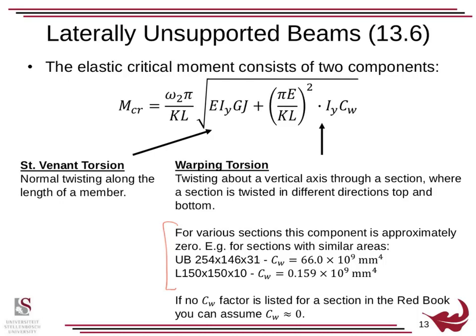If you have a look at these two sections, a UB 254x146x31 and a 150x150x10 angle, you can see they have roughly the same cross-sectional area but vastly different stiffnesses—orders of magnitude different—just because of the shape and how they resist warping.